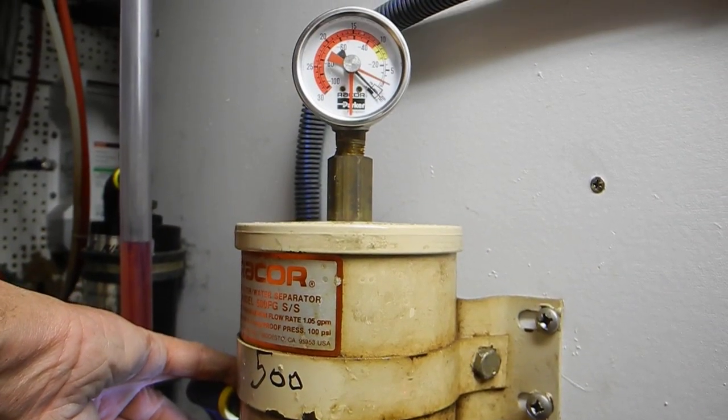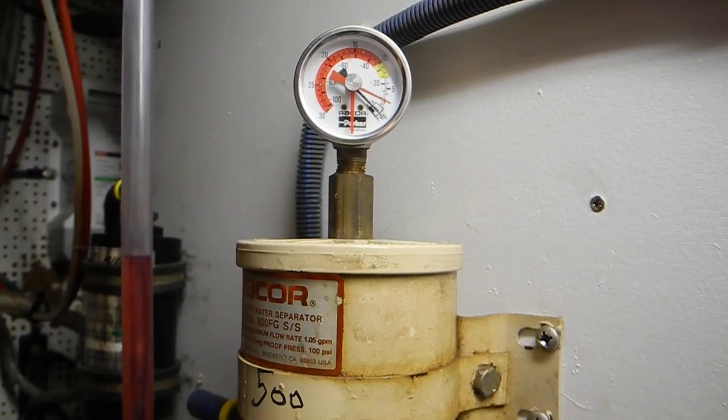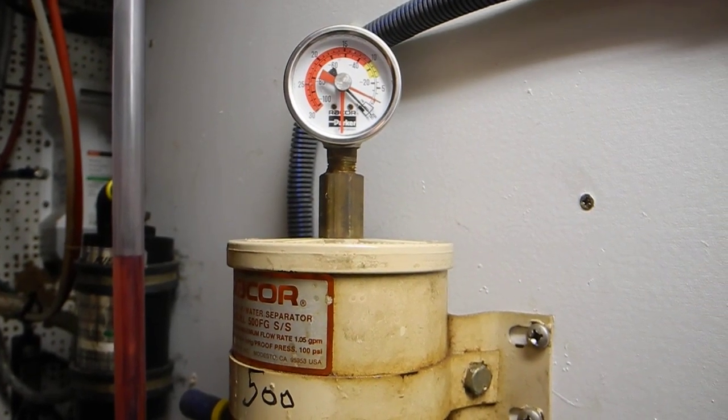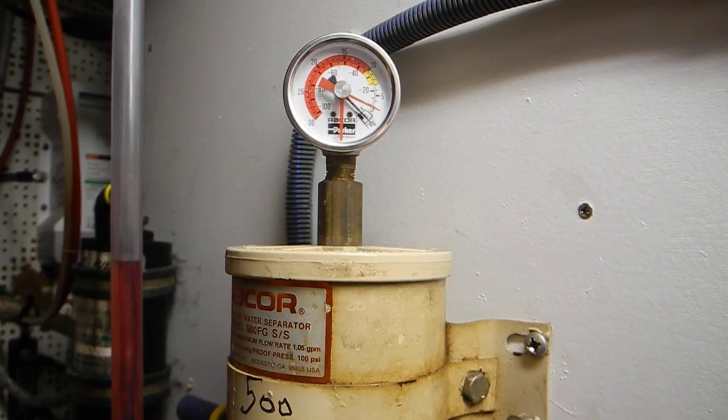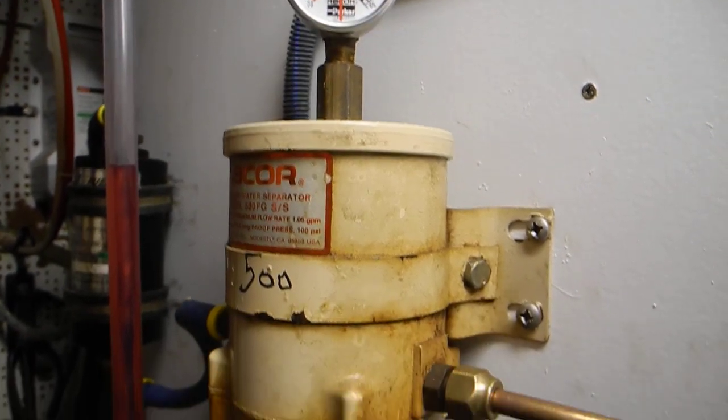And looking on top, we can see the vacuum gauge, not a pressure gauge, but the vacuum gauge is moved up a little bit. Not in the yellow or the red zone, but moved up a little bit, meaning it needs attention.